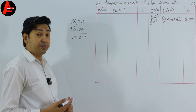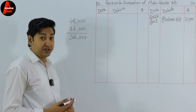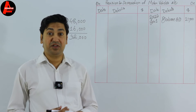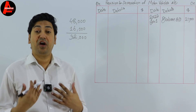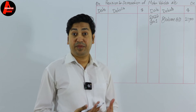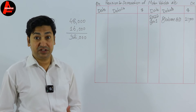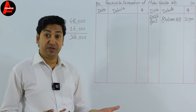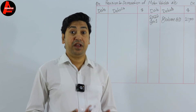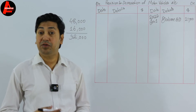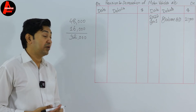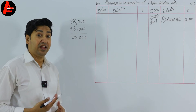Using the reducing balance method, the formula is: cost minus previous depreciation equals net book value. Multiplying the net book value by the depreciation rate of 25% gives the depreciation for the current year, which will appear on the income statement.